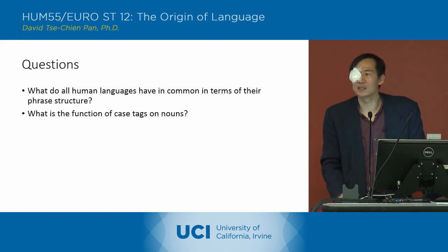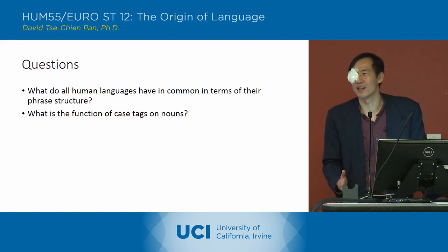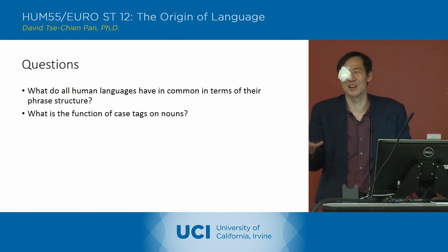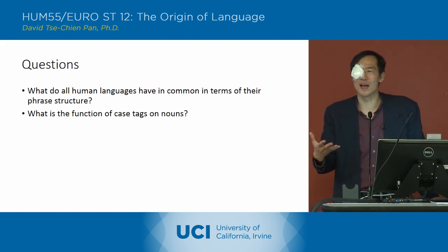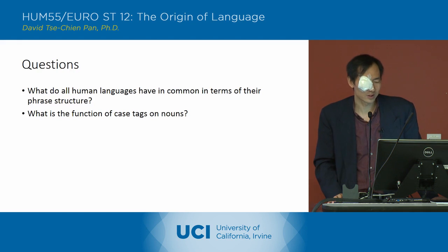So what is the function of case tags on nouns? Does anybody know a language that uses cases more explicitly than English, like Latin? Anybody learn Latin? Or German? English has cases too, it's just that they're not very obvious. We don't alter the nouns in order to demonstrate the cases, but as I indicated, we use word order to indicate the case. So what's the function of case tags then?